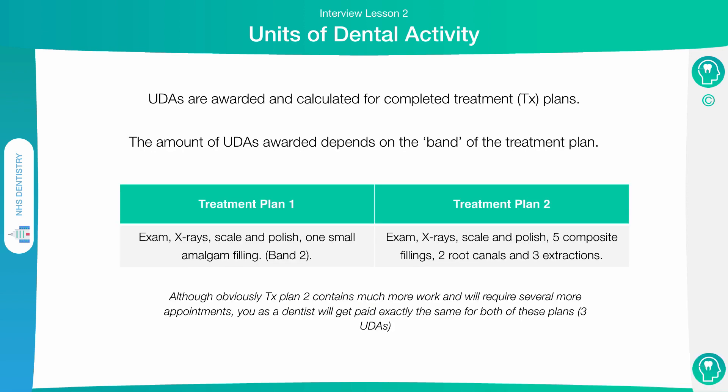The amount that you get paid and the number of units of dental activity that you provide are calculated based on the treatment plan. For example, here we have treatment plan 1 and treatment plan 2, given to separate patients — patient A and patient B. Both treatment plans have different amounts of treatment in them; however, all of the treatment in both plans falls into the category of band 2. This means they're both worth three units of dental activity, so the dentist gets paid exactly the same amount for both plans, regardless of the different amounts of work. Different treatments fall into different bands — band 1, band 2, and band 3 — and regardless of how many treatments from the same band you do, you get paid the UDAs relevant to the highest band of treatments you're performing.